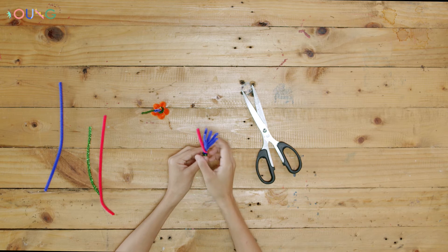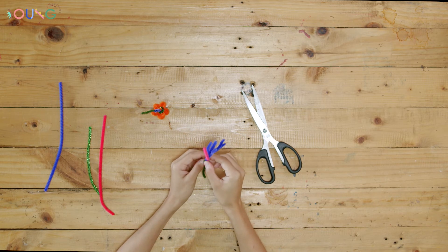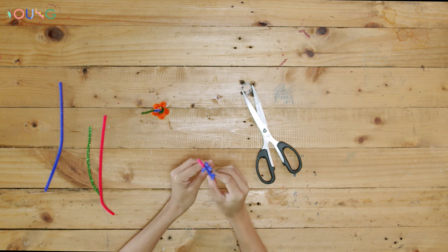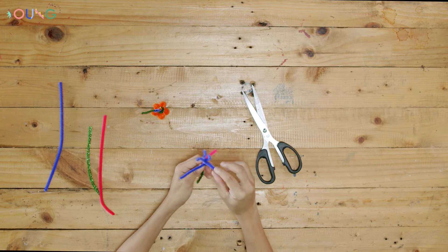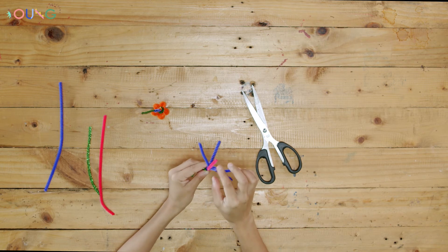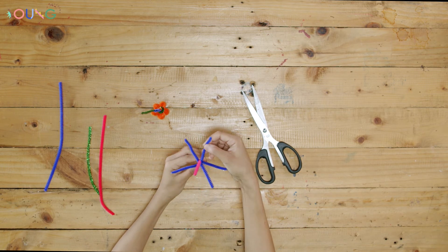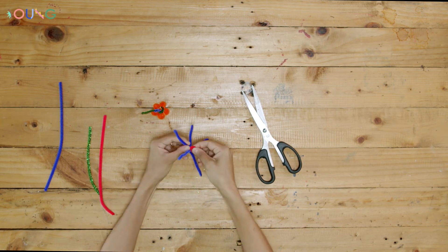Next, we're going to roll the pipe cleaners one by one starting from the pink one and moving on to the purple ones. Lay all the rolls flat just like this. Keep rolling until you roll all the petals.